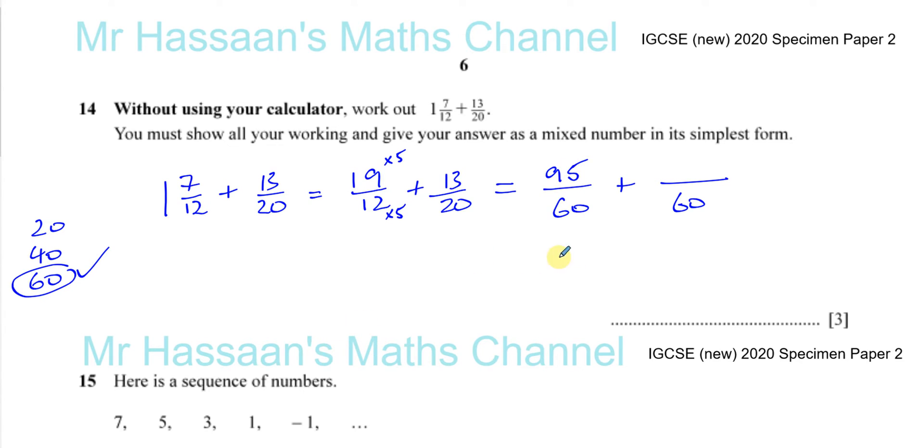If you're not sure you can do 19 times 5 here: 5 nines is 45, 5 ones is 5, plus 4 is 9, giving 95. Then you've got 20 times something gives you 60 - 20 times 3 gives you 60. And 13 times 3 is 30 plus 3, which is 39.